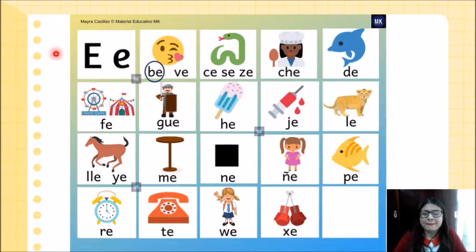Y dice así. Be, be, be, be, besito. Ce, ce, ce, ce, serpiente. Che, che, che, che, chefcito. De, de, de, de, delfincito. Fe, fe, fe, feria. Ge, ge, ge, ge, guerrerito. E, e, e, heladito.